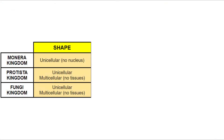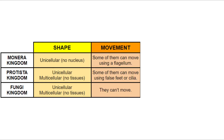So, to sum up — looking at shape: Monirans are unicellular and don't have a nucleus. Some protists are unicellular but have a nucleus, and others are multicellular but do not form tissues. Most fungi are multicellular, except for yeast, which are unicellular. For movement: some Monirans can move but others can't. Some protists can move but others can't. And fungi cannot move.